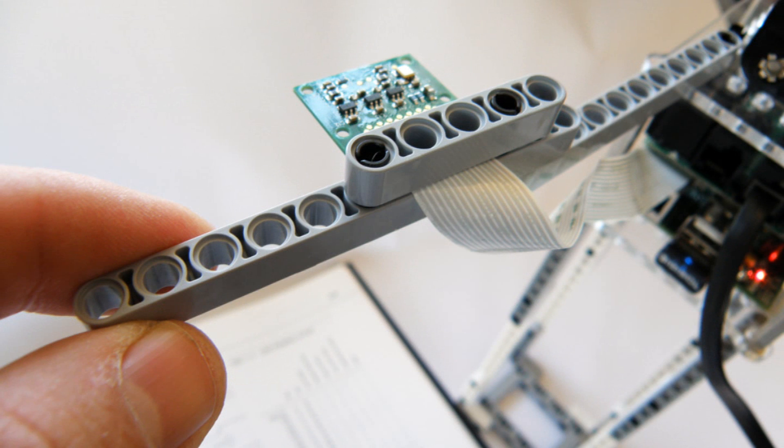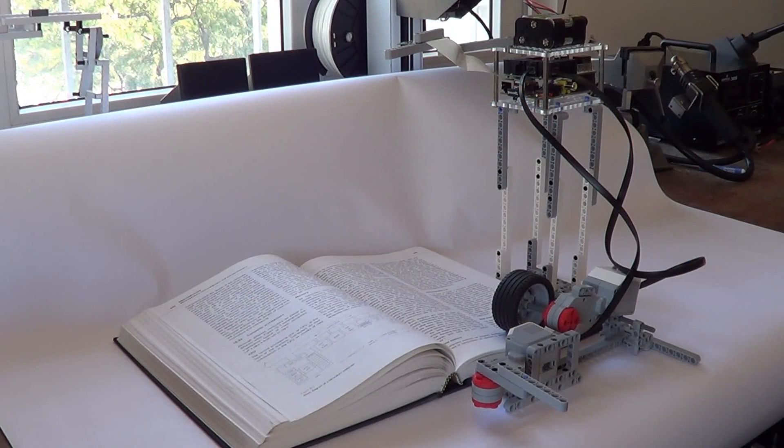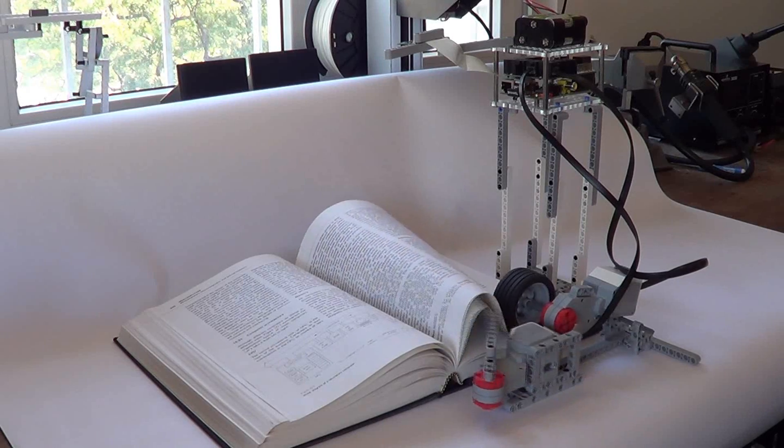After a new page is turned, the Raspberry Pi camera takes an image in JPEG format and saves it to file. Using open-source optical character recognition software on the Raspberry Pi, the BrickPi converts the page image into text.